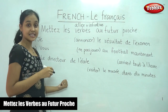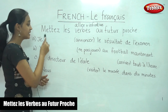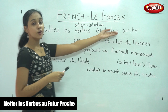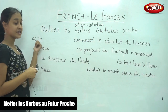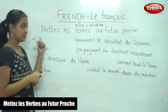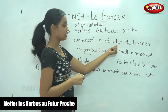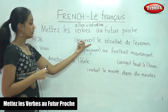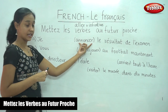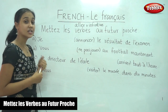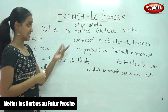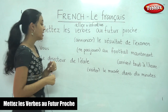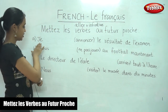Shall we begin solving this exercise? Mettez les verbes au Futur Proche — put these verbs in Futur Proche. Our first sentence: Je dash le résultat de l'examen. The verb given to us is annoncer. What is our rule for Futur Proche? It is the aller conjugation plus the infinitive. What is our subject? Je.